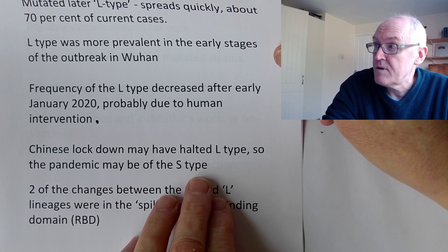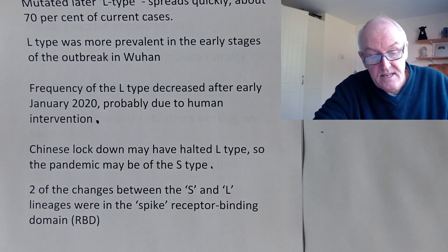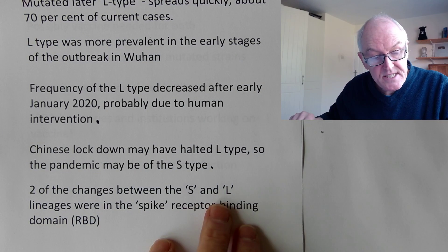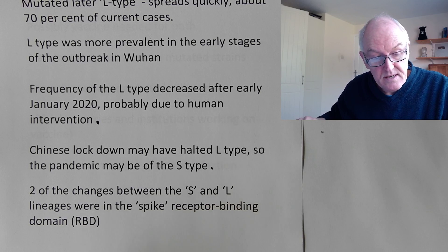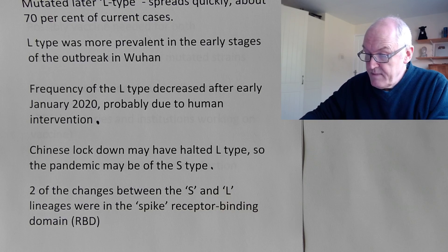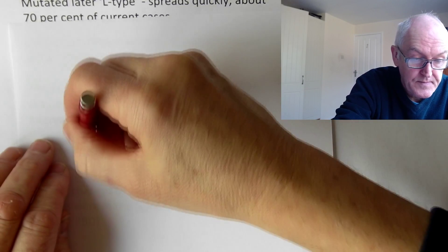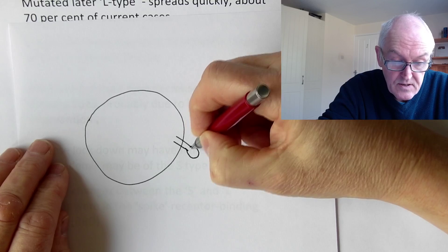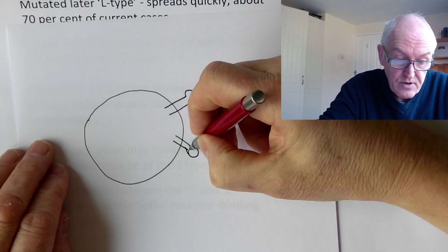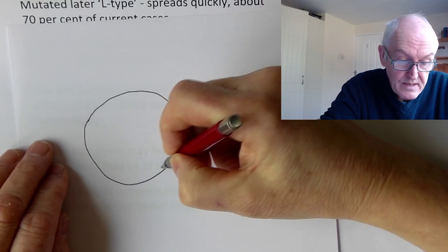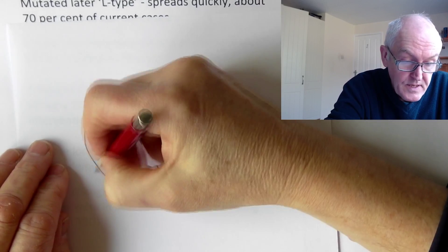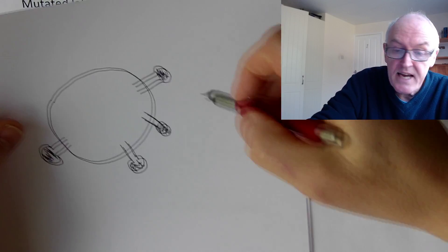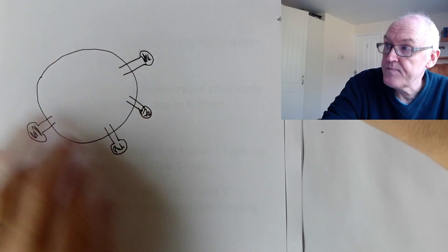The frequency of the L type decreased after early January, probably due to these interventions closing off opportunities for it to spread. The pandemic may therefore be of the S type, which is less transmissible and less virulent. Two of the changes between the S and the L lineages were in the spike receptor binding domain. The coronavirus has these protein spikes sticking off it - visible on electron micrographs - all around the virus.